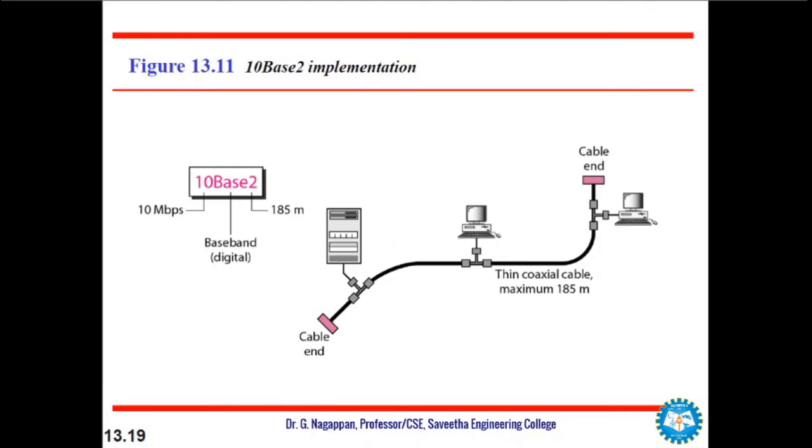Next comes 10Base2, called thin Ethernet. This thin Ethernet or cheapernet also uses bus topology similar to thick Ethernet, but the cable is much thinner and more flexible. The cable can be bent to pass very close to the stations. In this case, the transceiver is normally part of the network interface card itself, which is installed inside the station. The thin coaxial cable can be maximum 185 meters. Note that the collision occurs in the thin coaxial cable itself.